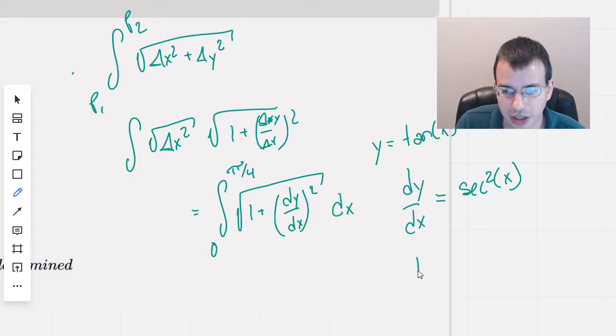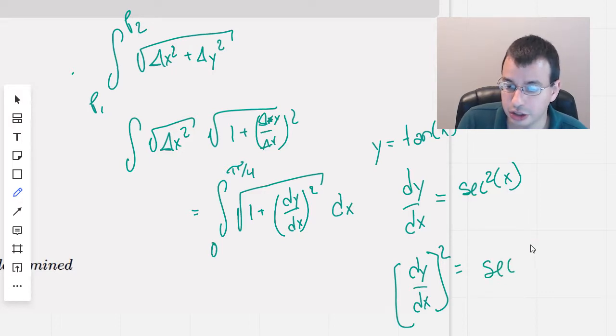And so then when we square that, dy/dx quantity squared, we will get secant squared squared, which will then just be secant to the fourth of x.